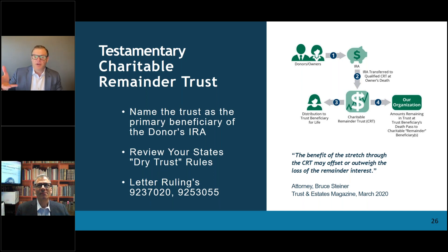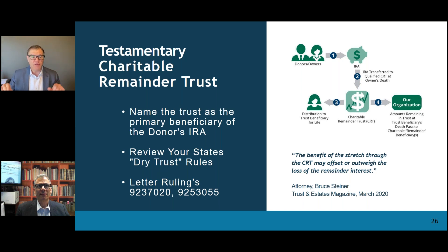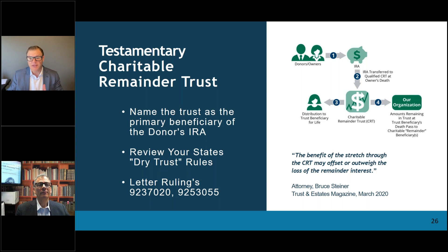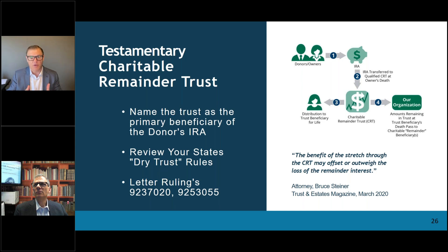I wish mom and dad had considered making the beneficiary of this IRA a charitable remainder trust, which would have allowed me to take the money out over 20 years, or maybe not take anything out until years 15 through 20. That's the layman's version, and now Paul is going to much better explain that. Attorney Bruce Steiner's quote captures it well — the benefit of the stretch through the CRT, because as Alan mentioned, you can set up a CRT for a term of years, or — as long as the CRT passes the test that actuarially 10% of the remainder goes to charity at the time it's funded — it can be for the life of the beneficiary.